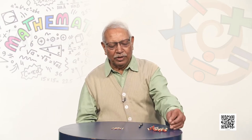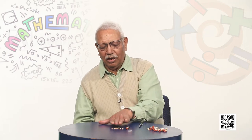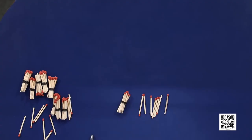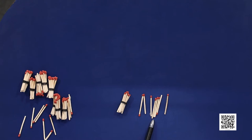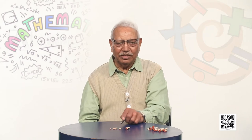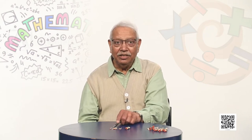Now let us count further. How many are these sticks? I have put a bundle of 10 sticks here. If I ask you now how many sticks are there, this is a bundle of 10, so we will start counting forward from 10: 10, 11, 12, 13, 14, 15, 16, 17, 18. So in answer to the question how many sticks, there are 18 sticks here.